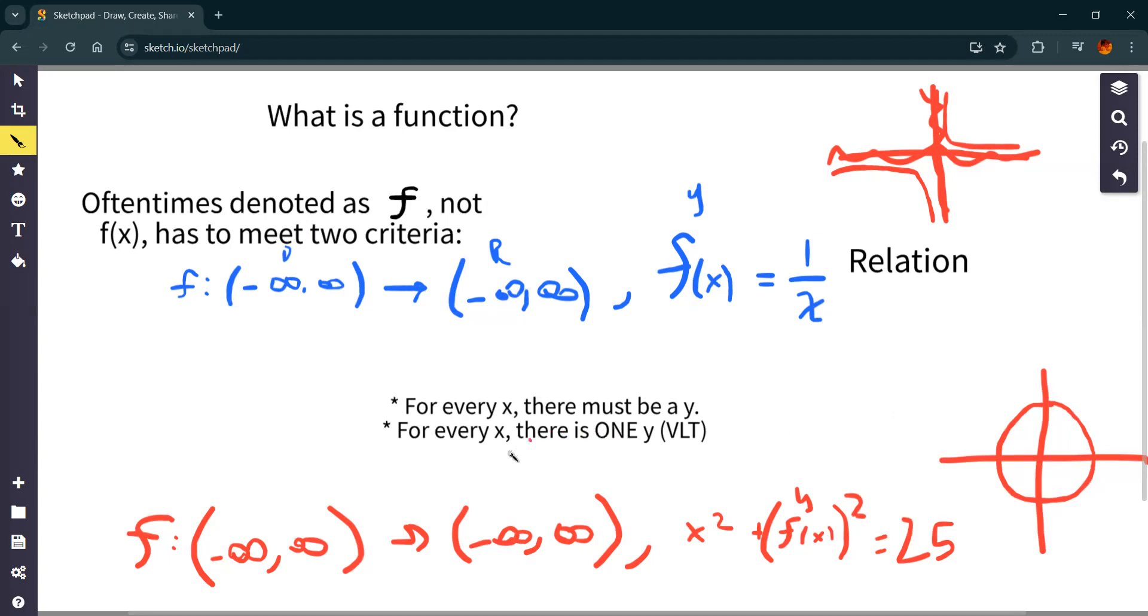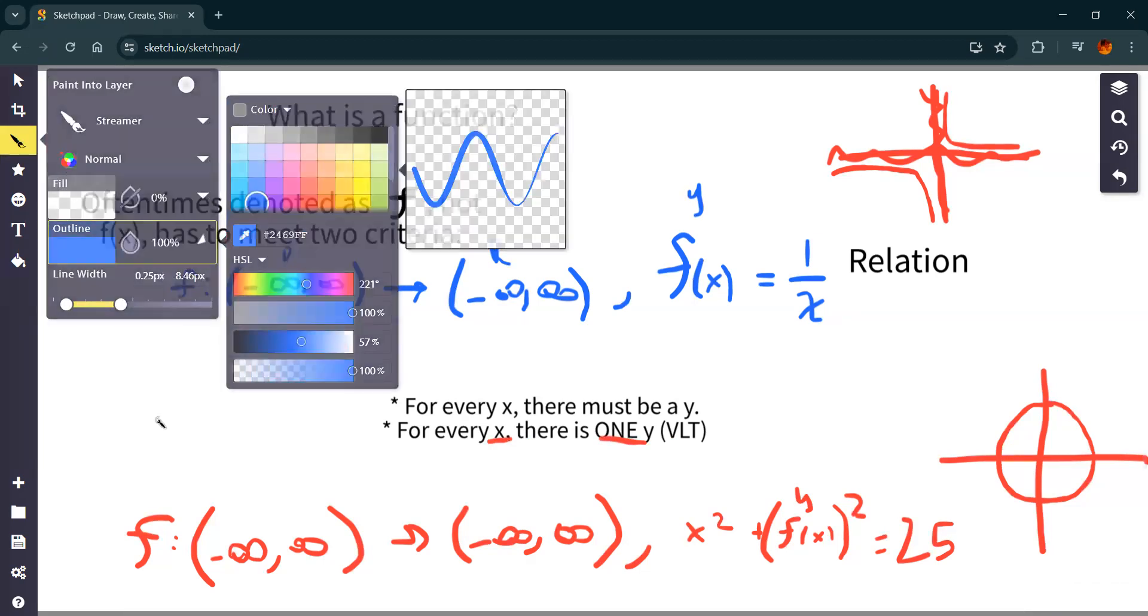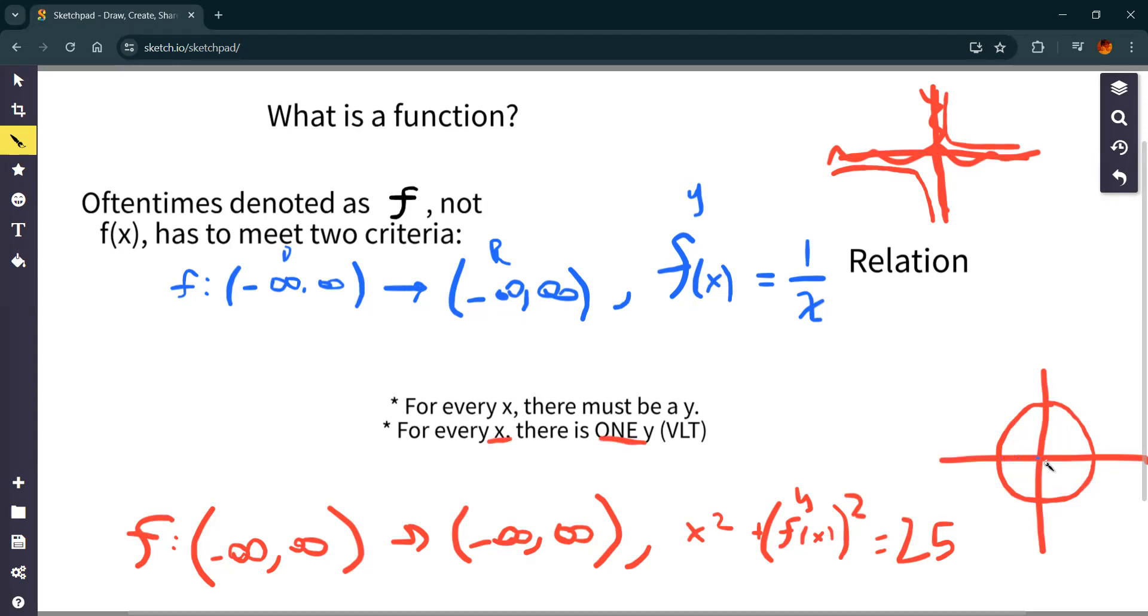A circle is not a function because this rule is broken. For every x, there's only one y. Well, here's... Let me change the color. Here's an x value, okay? But there's two y's here and here. It fails the vertical line test. That's a terrible vertical line. But that's what that VLT means. If it fails the vertical line test, meaning if you draw a vertical line and you go all the way through it, there should only ever be one y value at a certain point. But here, there's two. So that's not a function. It's also just a relation.